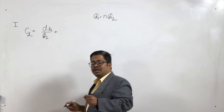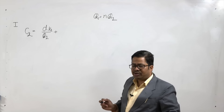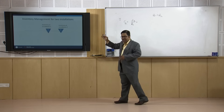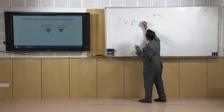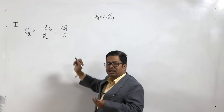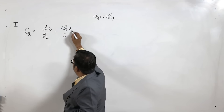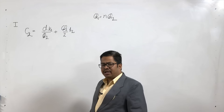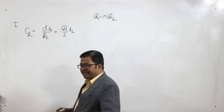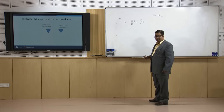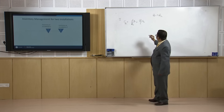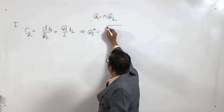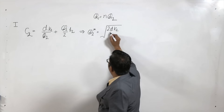The second cost is the holding cost. In EOQ development, holding cost is always paid on the average inventory stock. Q2 is the maximum and 0 is the minimum, so Q2 divided by 2 is the average inventory, and the holding cost is H2 per unit per year. This becomes the expression for calculating total variable cost at installation 2. Differentiating and applying principles of maxima-minima gives Q2* equal to the square root of 2DK2 over H2.